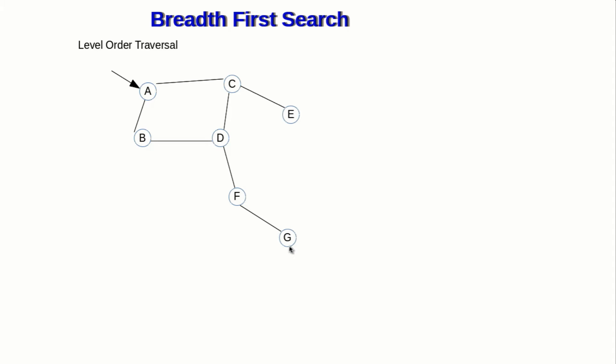The idea behind breadth-first search is that we try to visit all vertices of the same level one by one. First, we visit vertices at the zeroth level — that would be A. Then we visit B and C because they are at the next level, then D and E, then F, and then G.